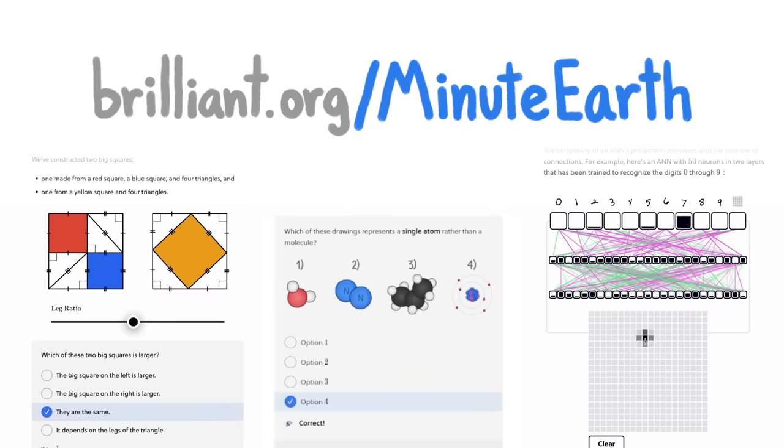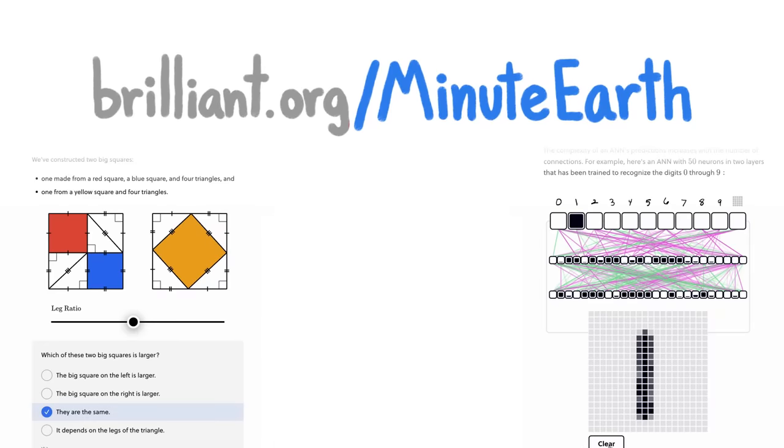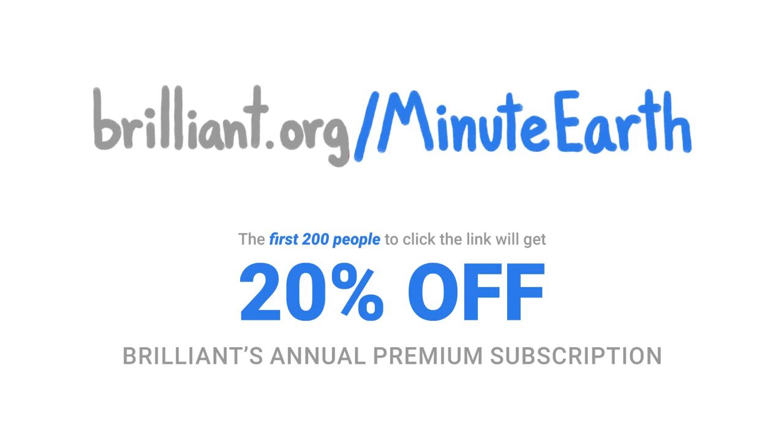To get started for free, visit brilliant.org slash MinuteEarth or click on the link in the description. The first 200 of you will get 20% off Brilliant's annual premium subscription. Thanks Brilliant!